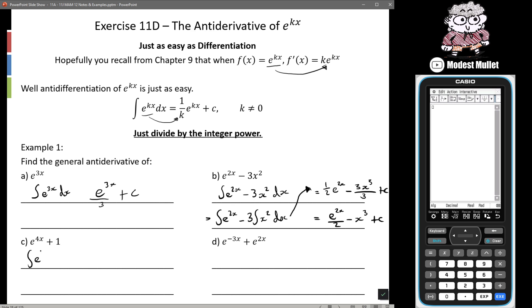Okay so the anti-derivative of e to the 4x plus 1 is equal to the anti-derivative of e to the 4x plus the anti-derivative of 1. We get 1/4 e to the 4x plus x plus c.